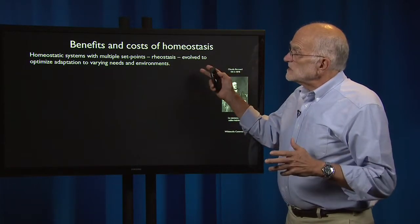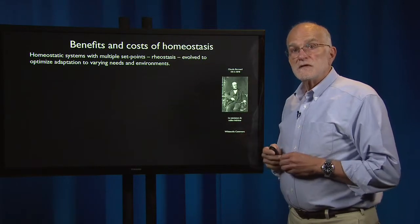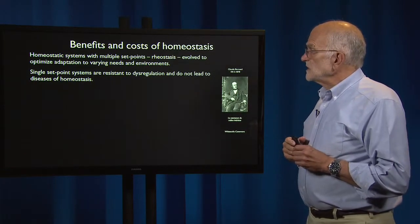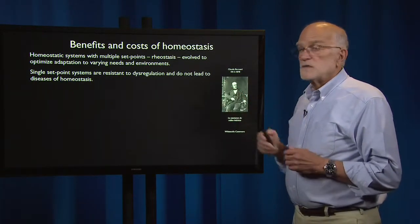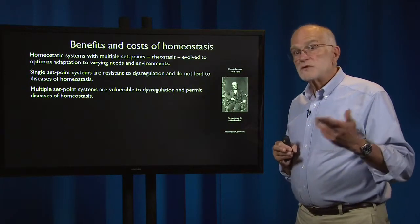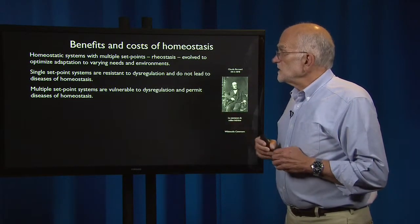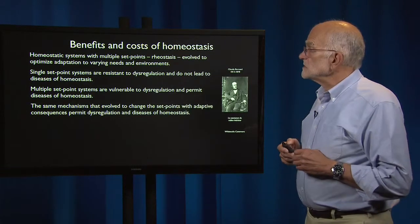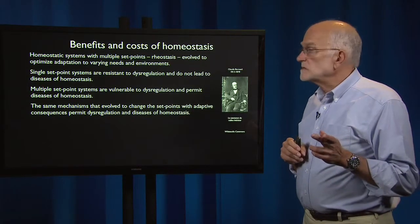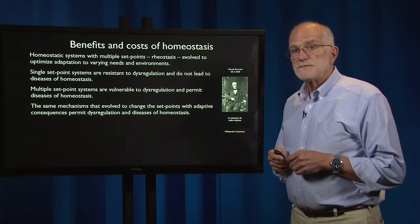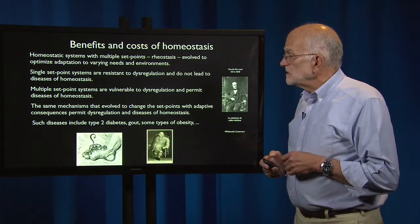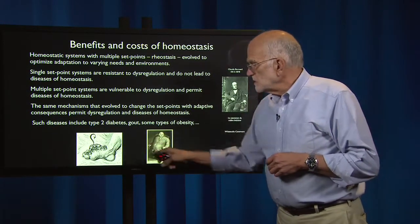That is how we evolved to optimize our adaptation to varying needs and environments. A single set point system is resistant to dysregulation and does not lead to a disease of homeostasis. But if you have multiple set points, as for example with our blood sugar levels, they are vulnerable to dysregulation and permit the diseases of homeostasis. The same mechanisms that evolve to change set points with adaptive consequences thus permit dysregulation and disease — such diseases include type 2 diabetes, gout, and some types of obesity.